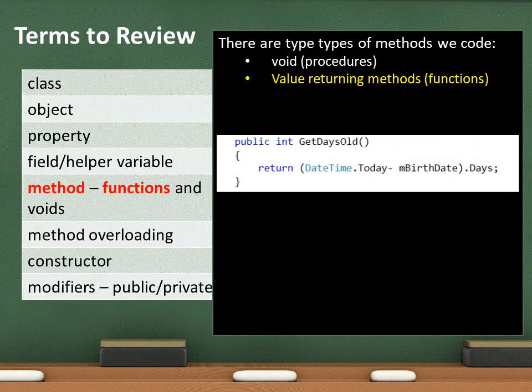The other type of method is a function — basically a user-defined command that lets you perform some activity and return a value. In this particular case, it's GetDaysOld. GetDaysOld is an integer function — it acts just like an integer. I'm taking DateTime.Today's date and subtracting from that a class-level variable, which must be the birthdate of that individual, and I'm trying to get the number of days back from that. The return value has to match the signature value. The signature here tells me it's an integer, so what I'm returning better be an integer — if it's not, I'm going to get a casting error.